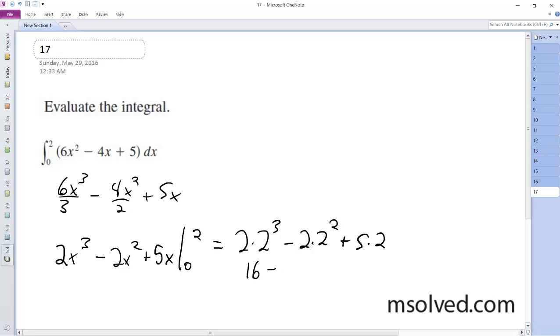This ends up being 18. Normally you'd subtract the 0 point, but 0 multiplied across just makes it equal to 0, so our solution here is 18.